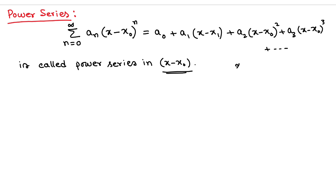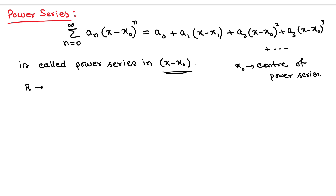This is a power series in (x minus x₀), and the point x₀ is the center. It is called the center of the power series. Since it is defined on a circular path, there will be a radius. We denote the radius by R and it is called the radius of convergence — where the series is convergent.